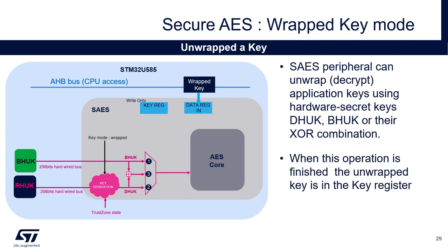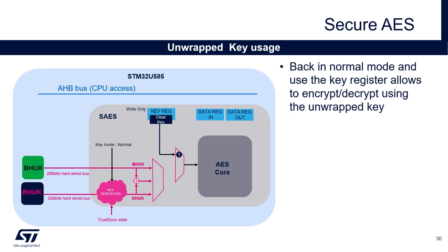The Secure IOS is also able to unwrap a key — that means to decrypt it without exposing its value. The application firmware configures the Secure IOS in wrap mode with the proper key source, and then provides the wrapped key in the data register. Once the unwrapping task is done, the key value in clear is pushed into the key register of the Secure IOS IP, which is a write-only register from the MCU's point of view. So the clear key value is not exposed, but it can now be used by the Secure IOS IP. The firmware then configures the Secure IOS in normal mode with the key register as the key source to encrypt or decrypt data. In this configuration, the clear key value is never exposed.